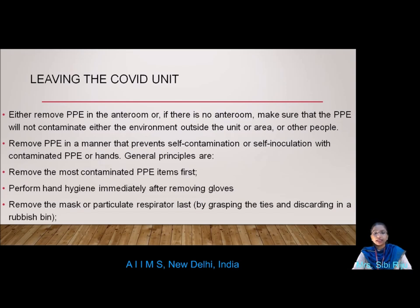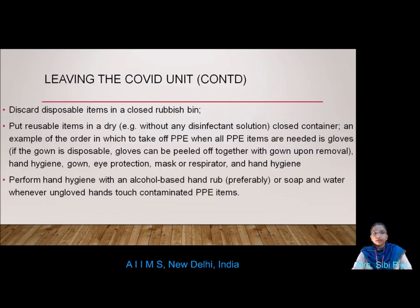When leaving the COVID unit, remove PPE in the anteroom to avoid contaminating outside areas. Key principles: remove the most contaminated PPE first; perform hand hygiene immediately after removing gloves; remove the mask or respirator last. Discard disposable items in a closed bin and put reusable items in a dry closed container. The order for PPE removal is: gloves — which can be peeled off together with gown if disposable — then hand hygiene, gown removal, eye protection, mask or respirator, and final hand hygiene. Perform hand hygiene with alcohol-based hand rub or soap and water whenever ungloved hands touch contaminated PPE items.